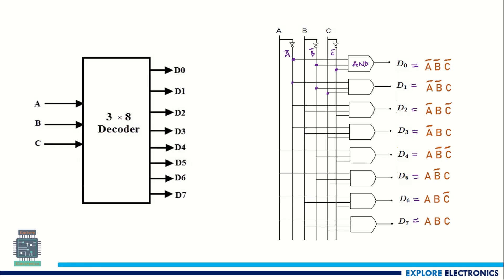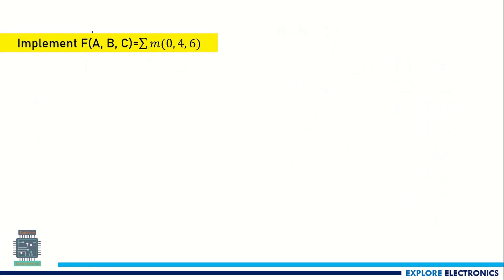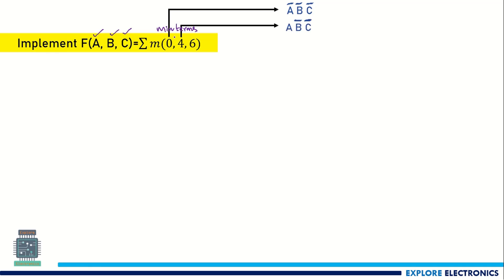The minterm expressions generated from the truth table have been implemented as circuits. Now, if you want to implement any function such as F(A, B, C) = Σm(0, 4, 6), these 0, 4, 6 are minterm values. Minterm 0 is Ā B̄ C̄, minterm 4 is A B̄ C̄ (since 4 = 100), and minterm 6 is A B C̄ (since 6 = 110).